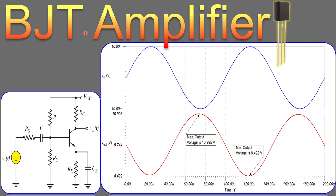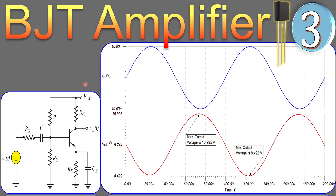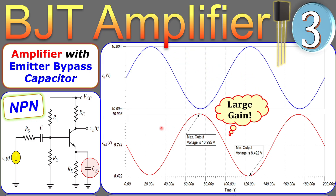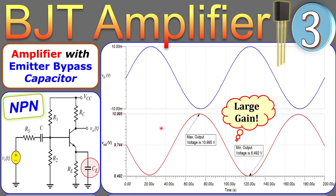Hi everyone and welcome to a new video about BJT amplifier circuits. This is our third example. In this example we will follow up on the second example we have discussed. We will see again an NPN transistor, but in this case we have an emitter bypass capacitor. We have discussed the emitter resistance, and now we also have a bypass capacitor which is a parallel capacitor across the emitter resistance. This will cause interesting things for our output response, and we should see that the gain will be quite large.